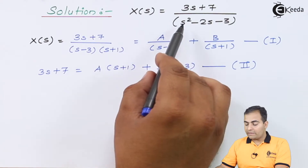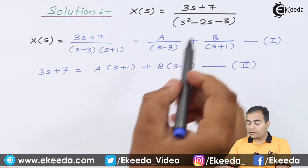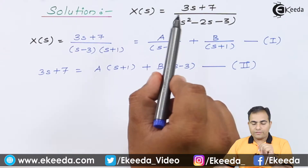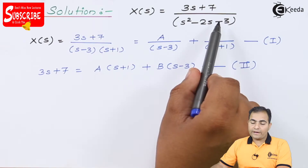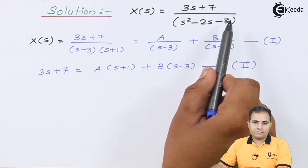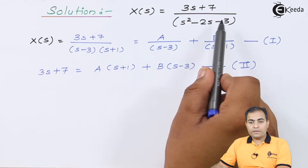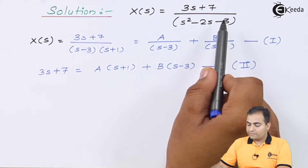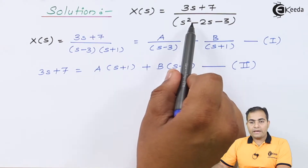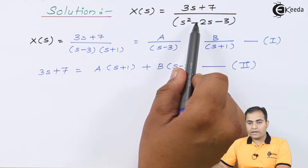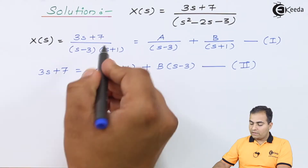To find the factors of the denominator s² - 2s - 3: we need two terms whose product is -3 and whose sum is -2. Trying -3 and +1: (-3)(+1) = -3 ✓, and -3 + 1 = -2 ✓. Therefore the factors are (s - 3)(s + 1), giving us poles at s = 3 and s = -1.